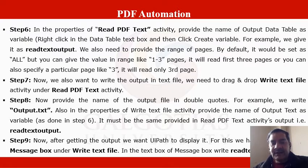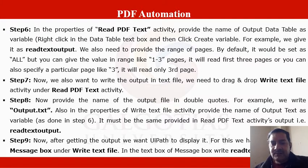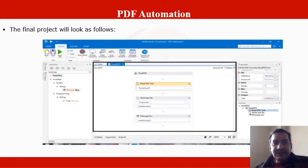Step 9: after getting the output, we want UiPath to display it. For this, drag and drop a Message Box under the Write Text File activity. The process is exactly the same as before - instead of writing a table, you are writing PDF content. In the message text box, write the variable 'readTextOutput', which is the output text variable created in step 6.